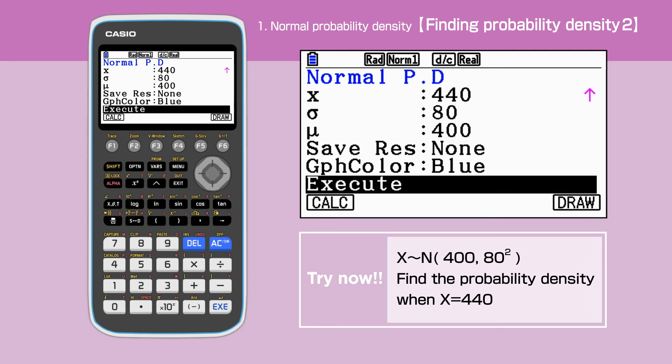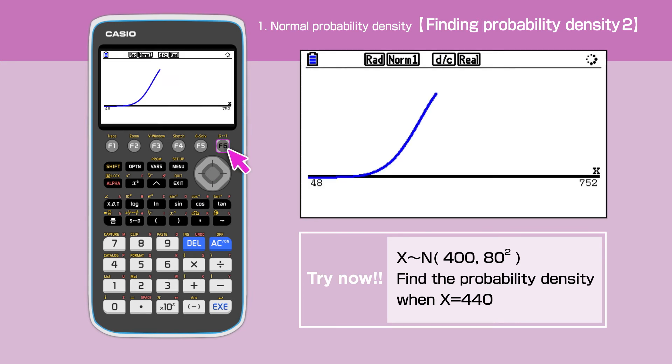Highlight Execute and press F6 to draw the graph. We have got 4.4 times 10 to the minus 3 for the answer.